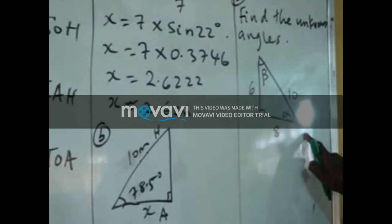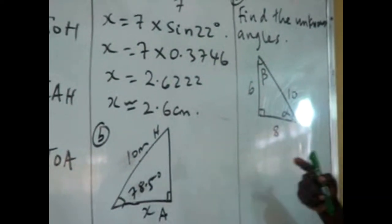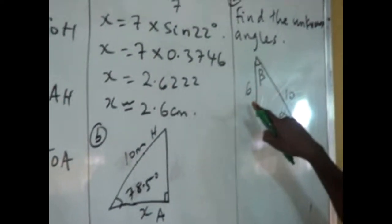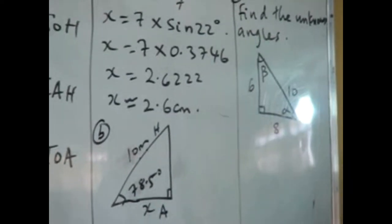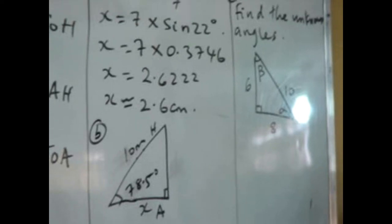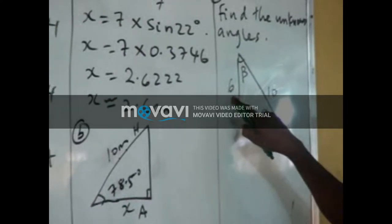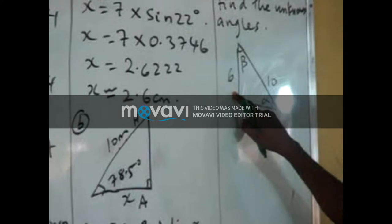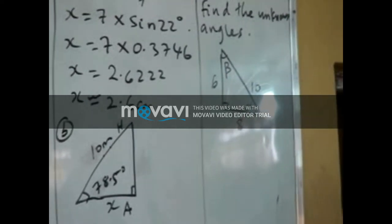I don't want to use it for now. This is my adjacent. If you decide to use the opposite and hypotenuse, we are going to arrive at the same answer. I want to use my opposite and hypotenuse. You may decide to use opposite and adjacent. We arrive at the same answer.